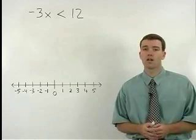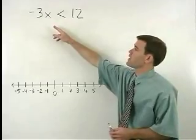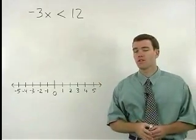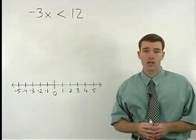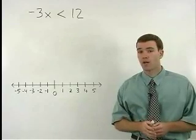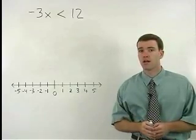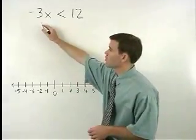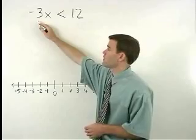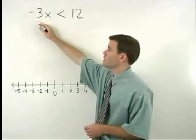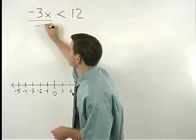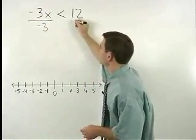When you're asked to solve an inequality like negative 3x is less than 12, your goal should be the same as it was when solving equations: to get x by itself on one side. In this problem, since x is being multiplied by negative 3 on the left side of the inequality, to get x by itself, we divide both sides by negative 3.